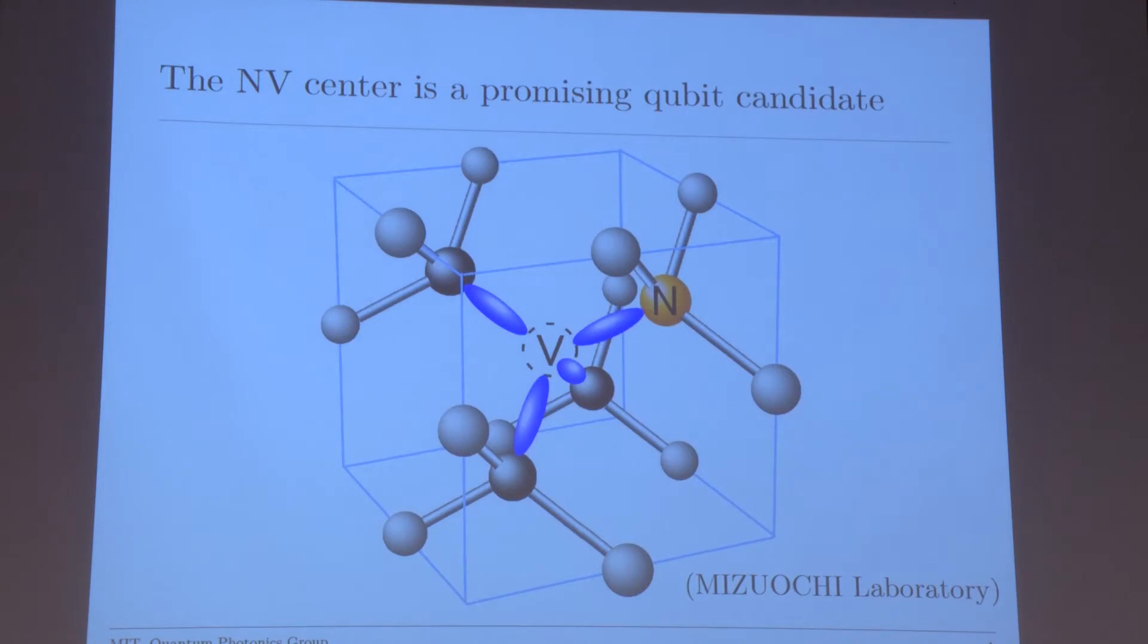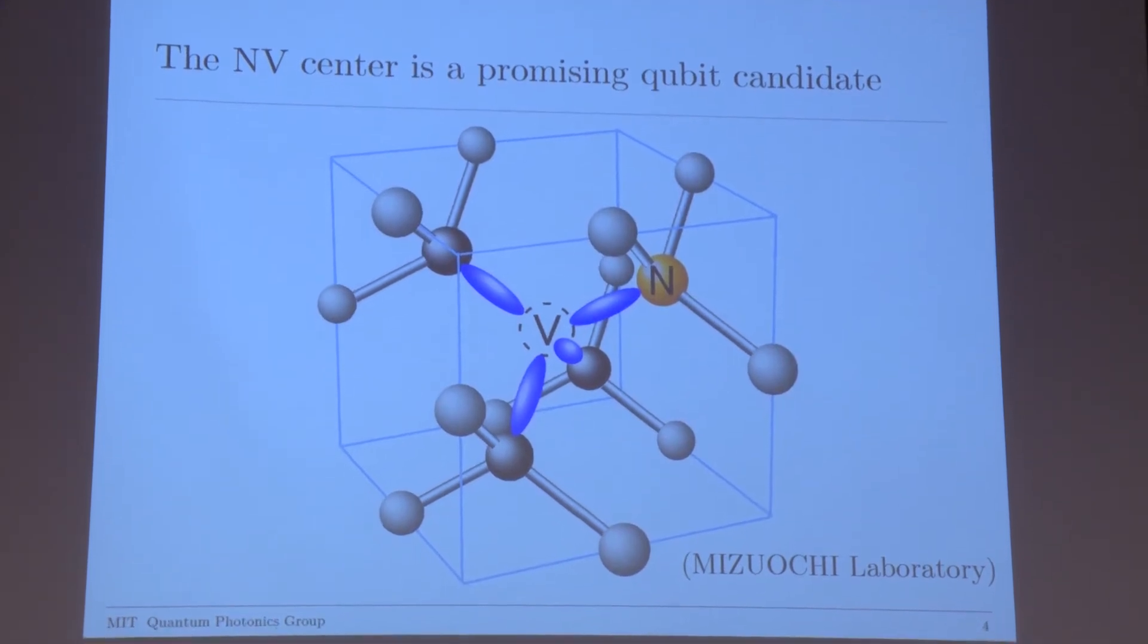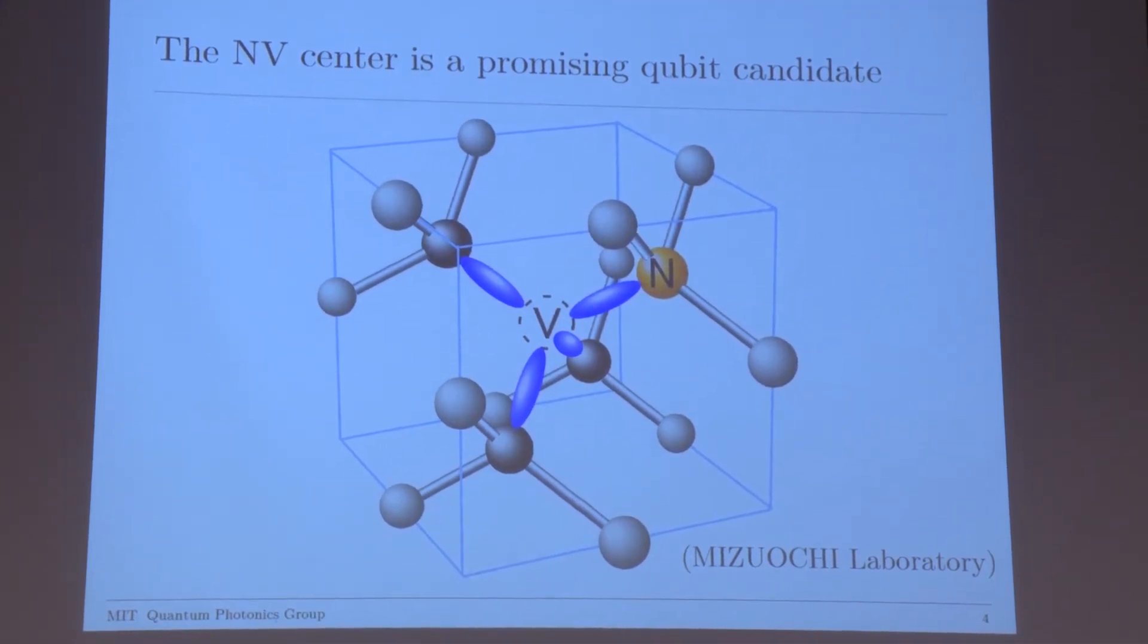However, it's not yet clear how exactly we want to build a quantum computer, and in particular how we want to construct a qubit. The nitrogen vacancy center is a very promising candidate because of its good qualities, such as being operable at higher temperatures than superconducting qubits, which is what Google is looking at.